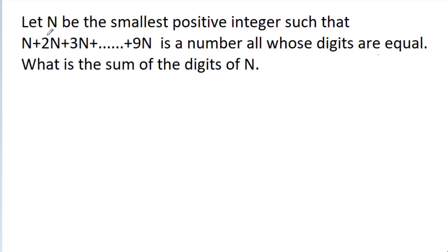In this video, we have given that n is the smallest positive integer such that n plus 2n plus 3n plus up to 9n is a number all whose digits are equal. We have to find the sum of digits of n.